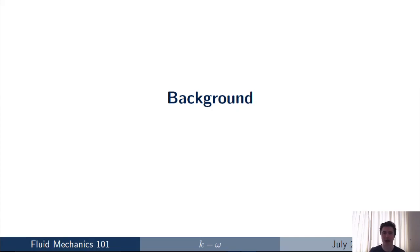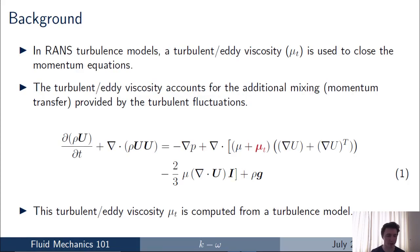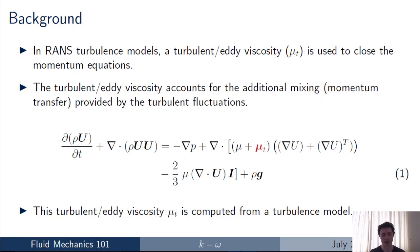I'm going to start with a background to motivate what we're going to talk about. As a reminder, we're talking about RANS turbulence models. In a RANS turbulence model, we calculate a turbulent or eddy viscosity mu_t and use that to close the momentum equations. Equation one is just the Reynolds-averaged Navier-Stokes equations, and we solve a model to compute mu_t — highlighted in red — which is the standard approach. The k-omega model is one example of a RANS turbulence model we can use to compute mu_t.